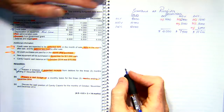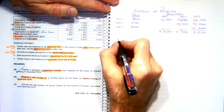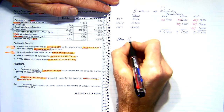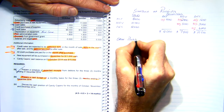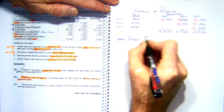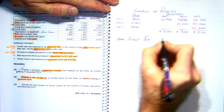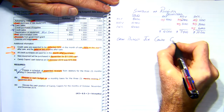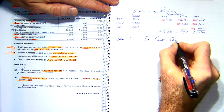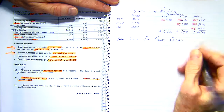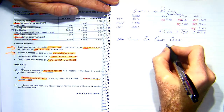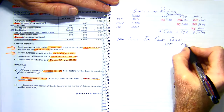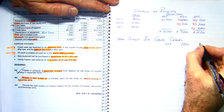So our cash budget for Candy Capers, and we'll do that for October, November, and December.